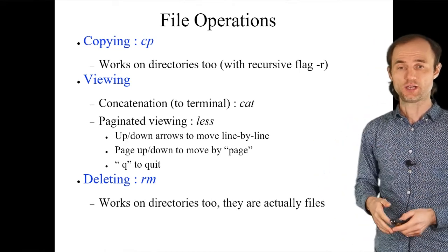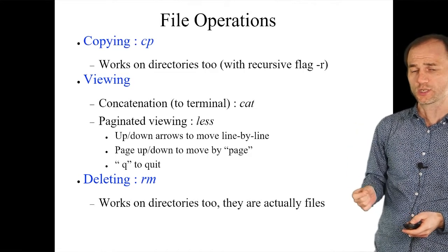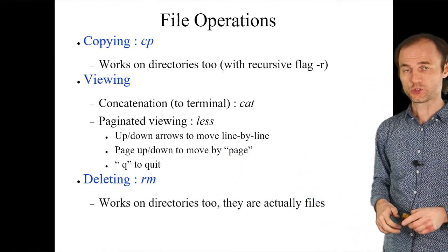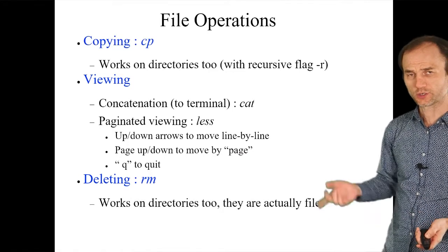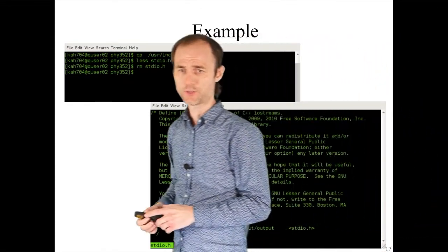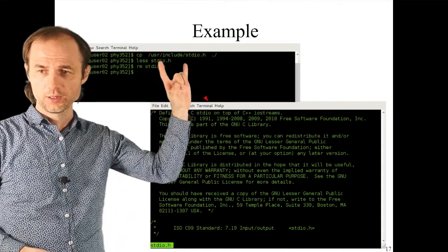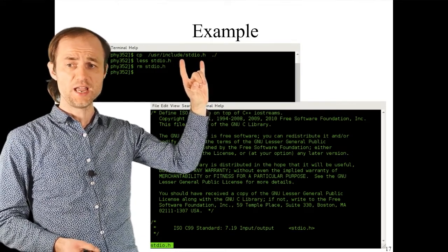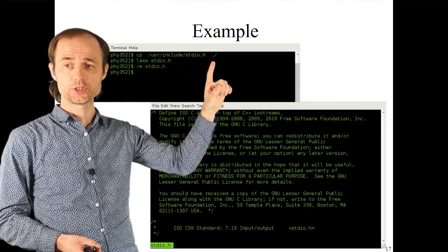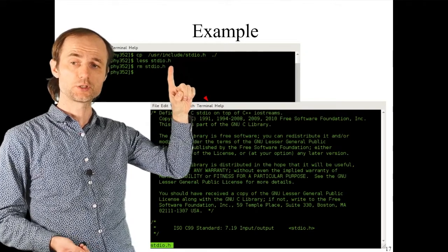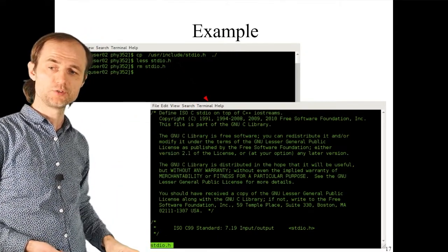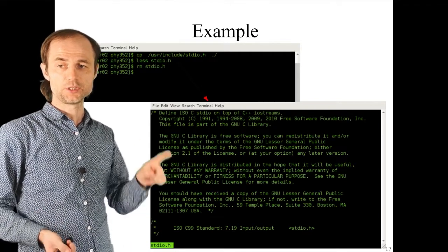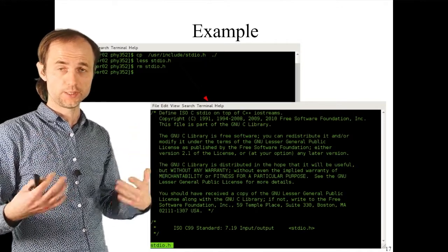With less, you see the first page; press spacebar to go to subsequent pages, or navigate back up, and press q to quit. To remove a file, use the rm command — type rm followed by the filename and it will be removed. rm also works on directories, though you may need to add a switch (which you'll discover when you try it). As an example, we'll copy the standard header file stdio.h into the current directory, view it with less, and then remove it with rm.